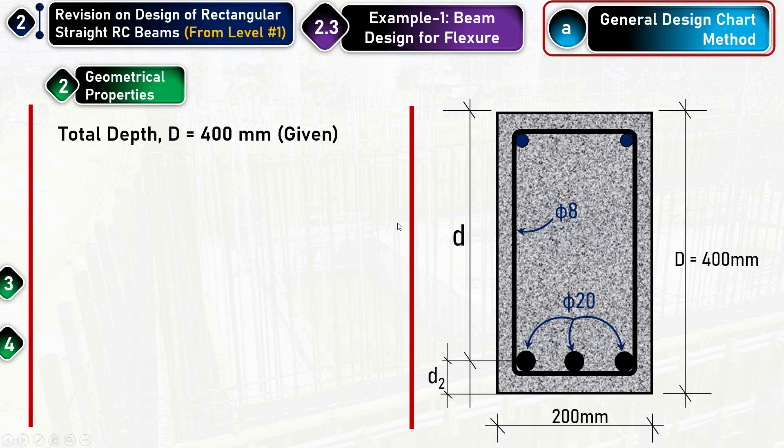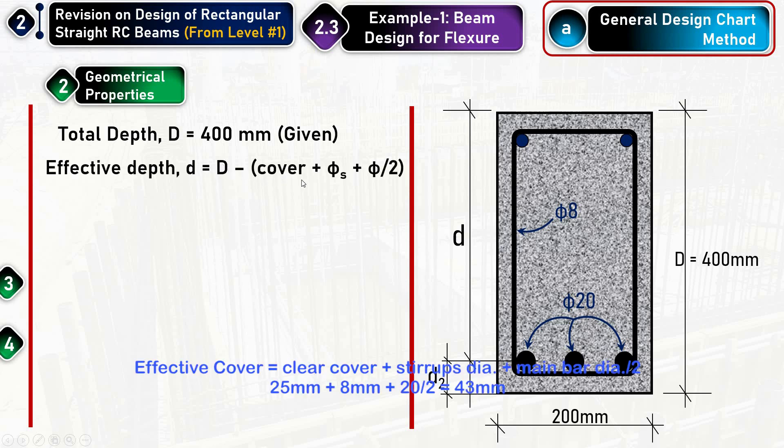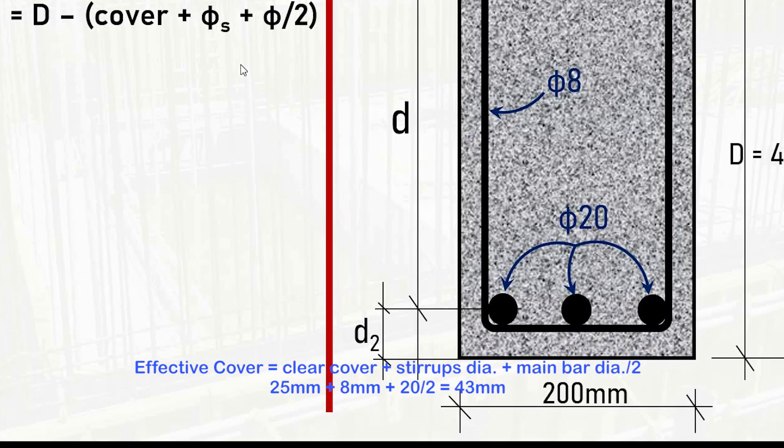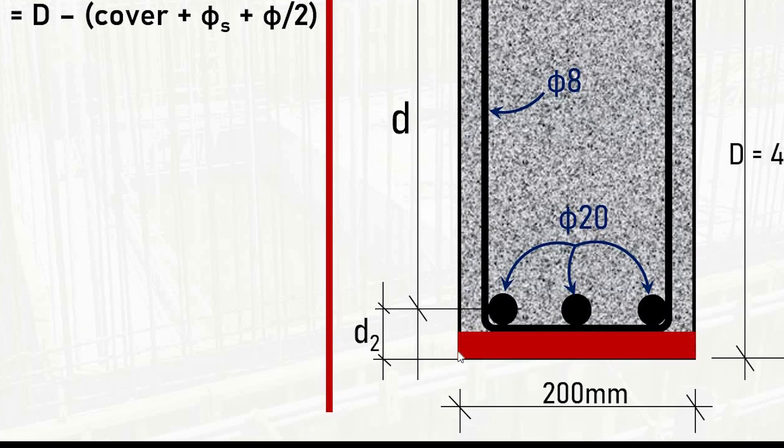The formula for the effective depth is D minus the sum of these three parameters. What are these three parameters? These three parameters is one: the concrete cover here below the stirrup.